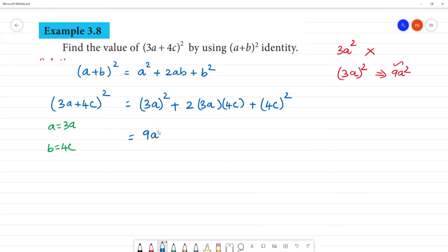3² is 9a², plus 2 times 3 is 6, 6 times 4 is 24, so 24ac, plus 4 times 4 is 16c². Clear.